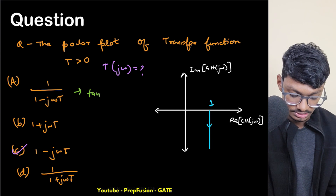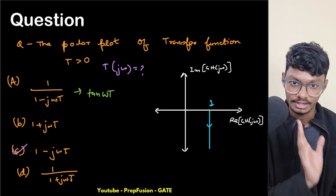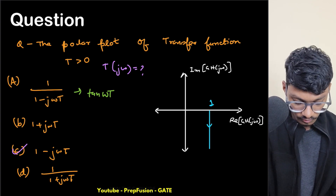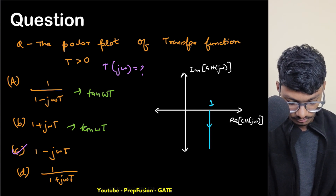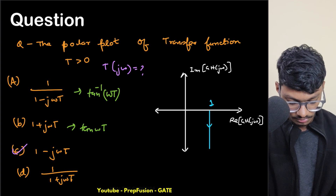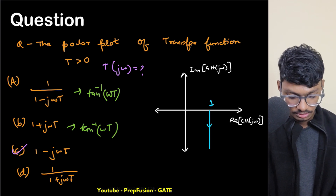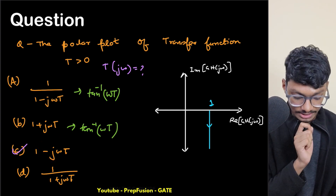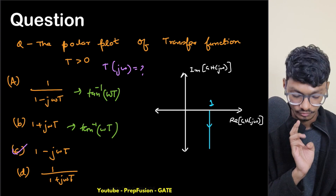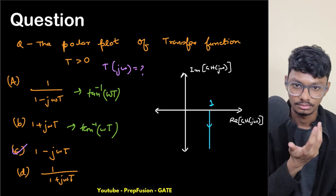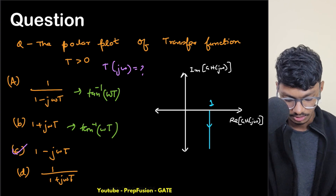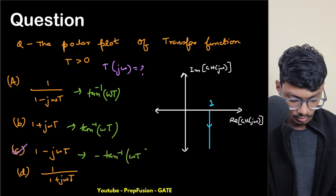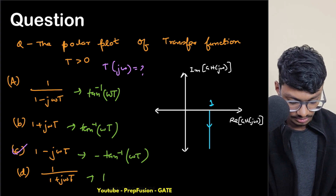The angle formula here is minus tan⁻¹(ωT). Since this term is in the denominator, an extra minus sign appears, making it plus tan⁻¹(ωT). For the option in the fourth quadrant, where the imaginary part is negative and the real part is positive, the angle is minus tan⁻¹(ωT). Since that term was in the denominator, the extra minus sign gives us minus tan⁻¹(ωT) confirmed.